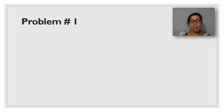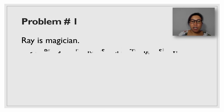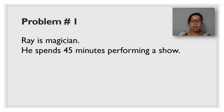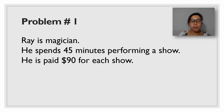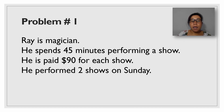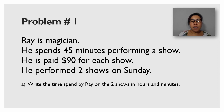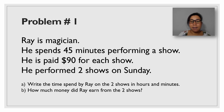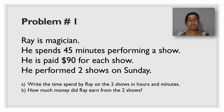Now let's try to answer the following problems involving time. First problem: Ray is a magician. He spends 45 minutes performing a show. He is paid $90 for each show. He performed 2 shows on Sunday. Question 1: write the time spent by Ray on the 2 shows in hours and minutes. And how much money did Ray earn for 2 shows?